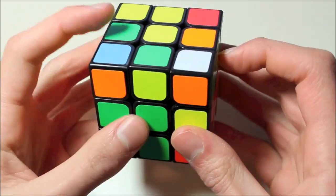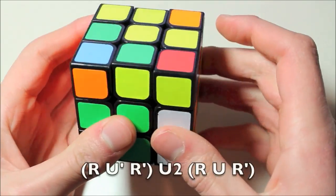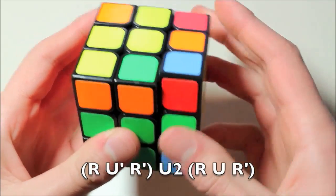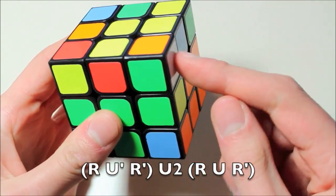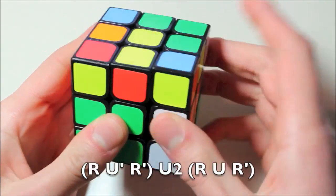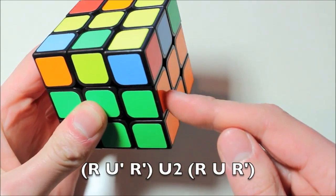For example, one solution to this case is R U' R' which is one of the triggers, then U2, an adjustment of the U-face or AUF, then R U R' to insert this pair.